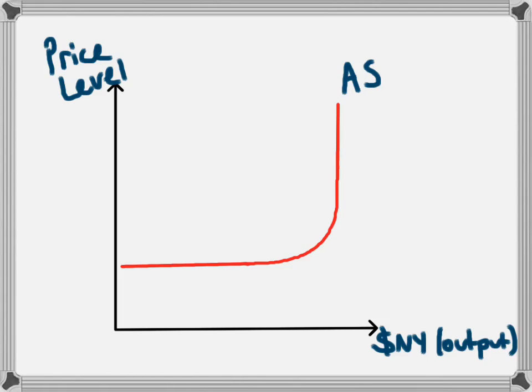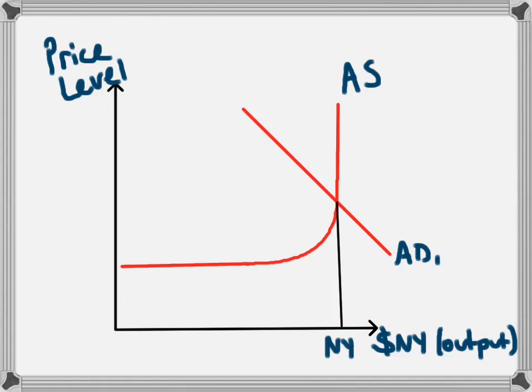If, however, the economy was at a very high level of national income — so if aggregate demand was at this level — we call this the full employment level of national income. That is because even if there was an increase in aggregate demand, the economy physically could not produce any more products. The aggregate supply is at its absolute maximum, and all the resources of the economy are being used — that's why it's called full employment.